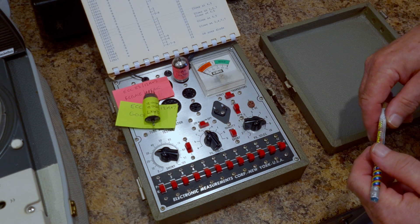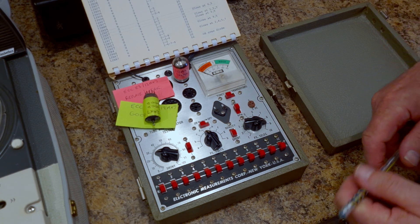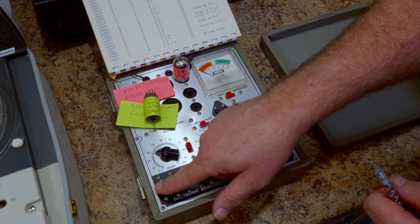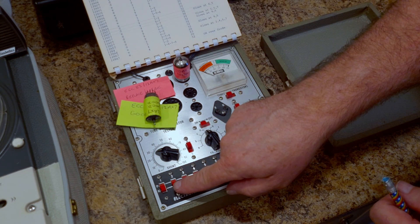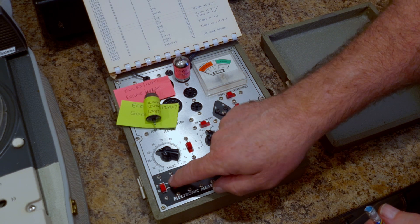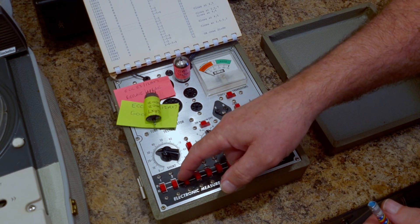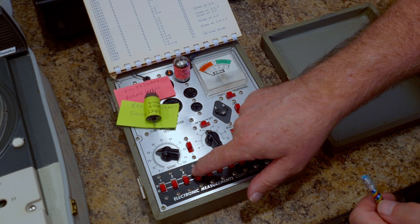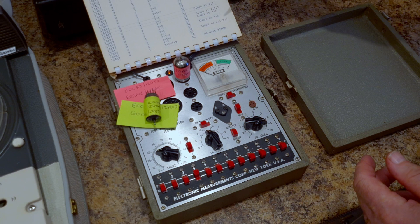To do the shorts test, all we do is move these switches up one at a time and we observe this neon lamp here. If the lamp goes on, we know we got a fault. Sometimes you'll see some flashing; that's only capacitance. On four there, the lamp has gone on.